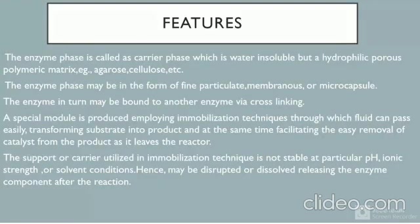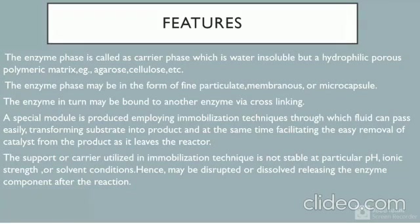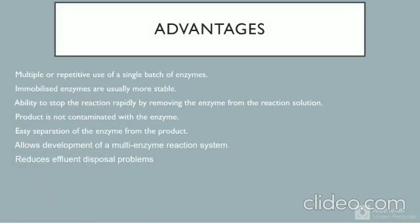The features of enzyme immobilization: the carrier phase is water-insoluble but a hydrophilic porous polymeric matrix — such as agarose or cellulose — is used. The enzyme phase may be in the form of fine particulate, membranous, or microcapsule. The enzyme may be bound to another enzyme via cross-linking. A special module is produced employing immobilization techniques through which fluid can pass easily, transforming substrate into product while facilitating easy removal of the catalyst. The carrier utilized in immobilization may not be stable at particular pH, ionic strength, or solvent conditions and can be disrupted or dissolved, releasing the enzyme component after the reaction.